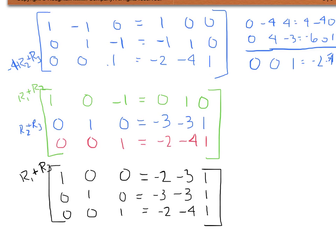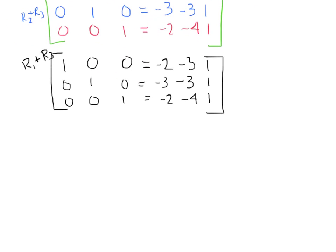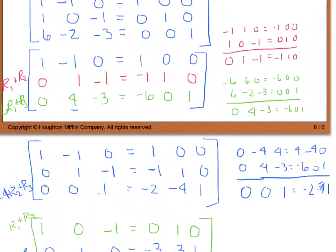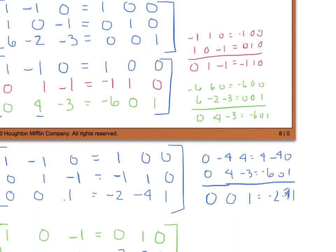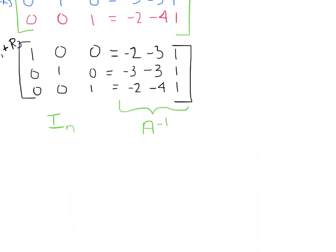Because we were able to get the left side into reduced row echelon form, we have created the identity matrix on the left — this is I sub n — and the matrix on the right is our inverse matrix of A. You can verify this on your calculator. The inverse of matrix A, which we were given at the beginning, equals the matrix we just found.